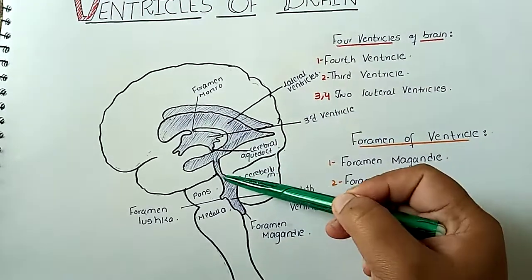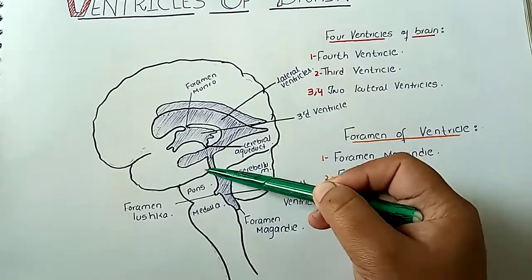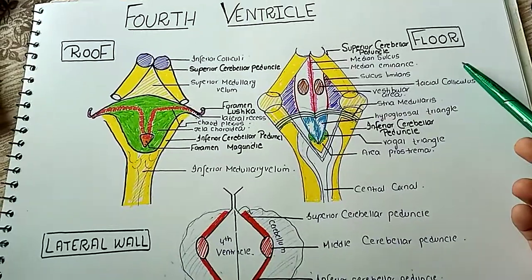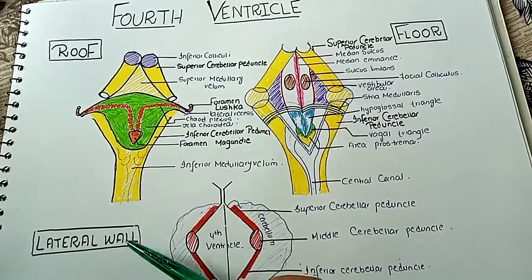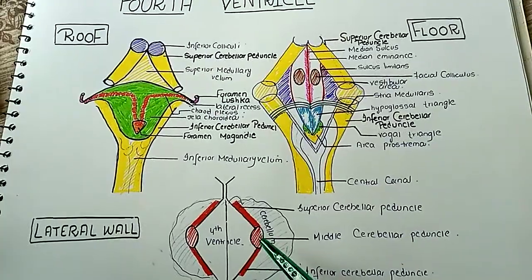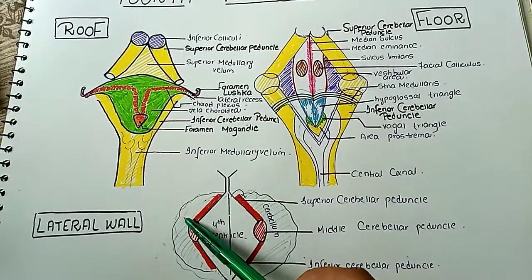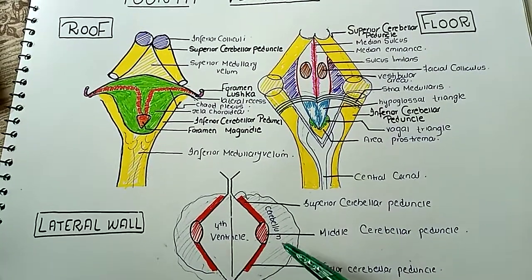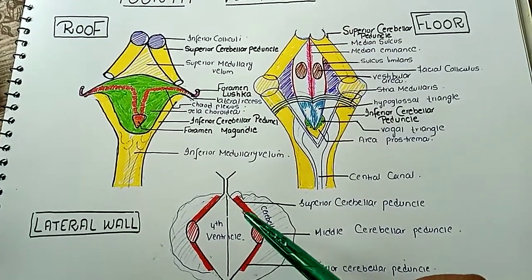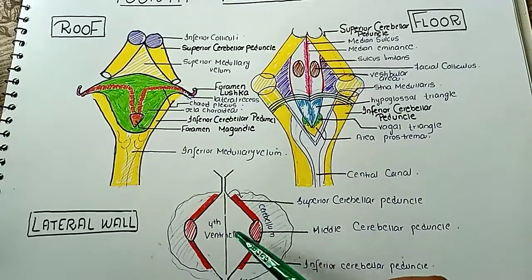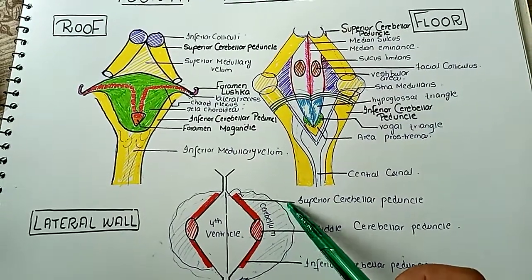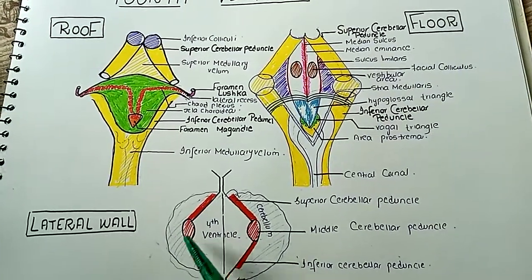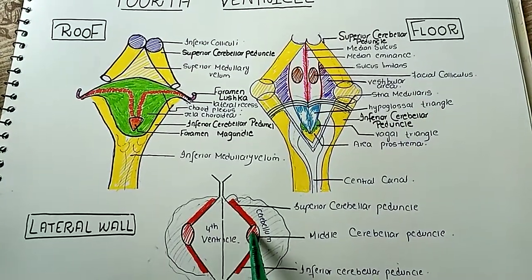Now let's move towards the explanation of the 4th ventricle. There are 4 boundaries of the 4th ventricle: the floor, the lateral wall, and the roof. The lateral wall of the 4th ventricle is formed by the 3 peduncles of the cerebellum. Since this ventricle is present anterior to the cerebellum, all 3 peduncles contribute to the formation of the 2 lateral walls.